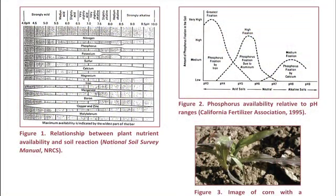Figure one and figure two show the nutrient availability relationship between soil pH and most of our nutrients — ideally you want to have close to a neutral pH around seven. It shows phosphorus availability relative to pH ranges; when we get to lower levels of pH, more acid, it fixes phosphorus by aluminum and iron. Also, at higher pHs like we may have in western Nebraska, it fixes to calcium.